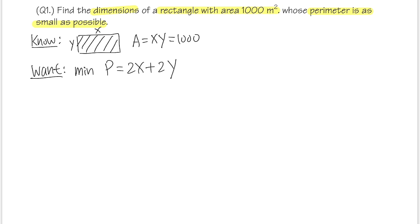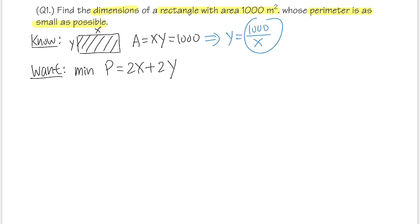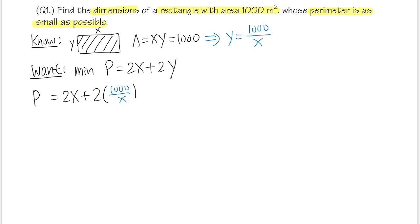The perimeter has both x and y, which isn't ideal yet. Let's go back to the constraint equation: x times y equals 1000. We divide both sides by x to get y equals 1000 over x, then substitute into the perimeter equation. So P equals 2x plus 2y, and substituting y gives us P as a function of x only: P(x) = 2x plus 2(1000/x).